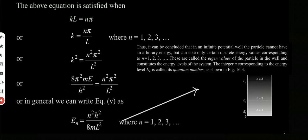This implies that in an infinite potential well — a one-dimensional box — the particle cannot have an arbitrary energy value. It can take only discrete energy values corresponding to n equal to 1, 2, 3. These are called the eigenvalues of the particle in the well and constitute the energy levels of the system. The integer n corresponding to each energy level is called its quantum number.